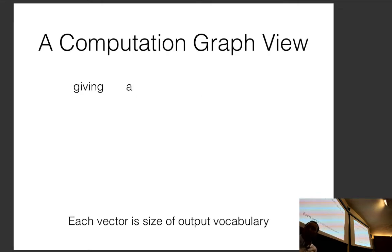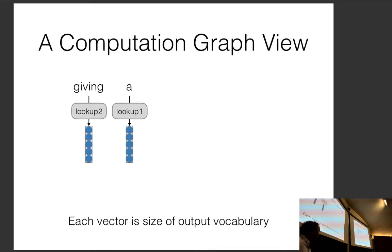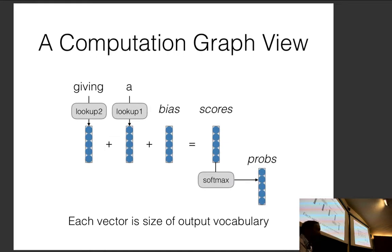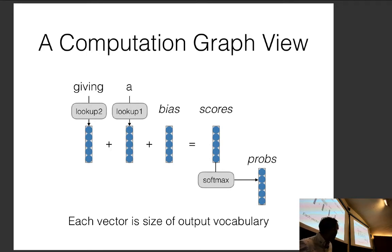Viewing this as a computation graph, we have two lookup tables: one for the word two positions ago and one for the word one position ago. The bias is the same every time, so it's just a fixed vector. We add them together to get scores, take a softmax, and get a probability. This looks very similar to the bag-of-words model from last class, except we pay attention to word order by keeping separate lookup tables for each position.